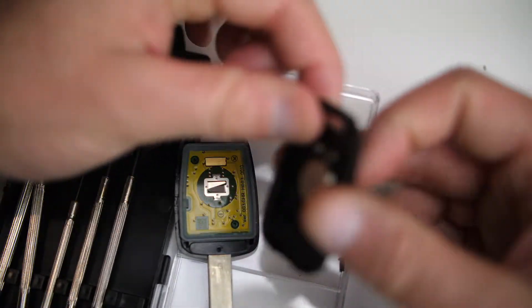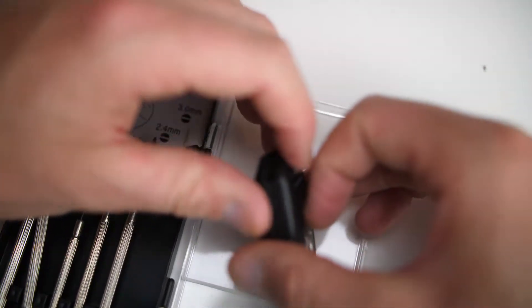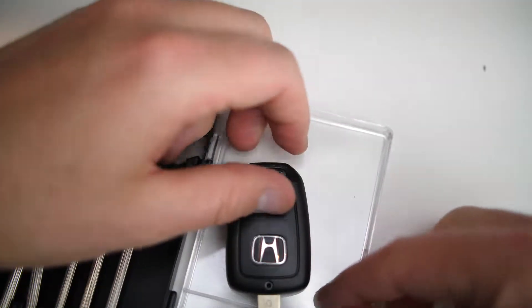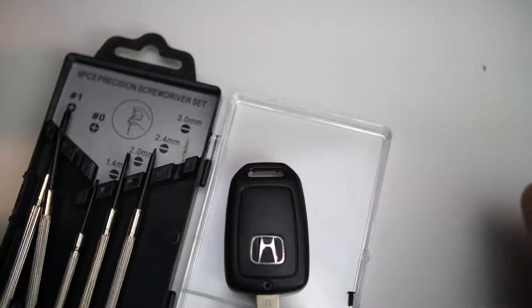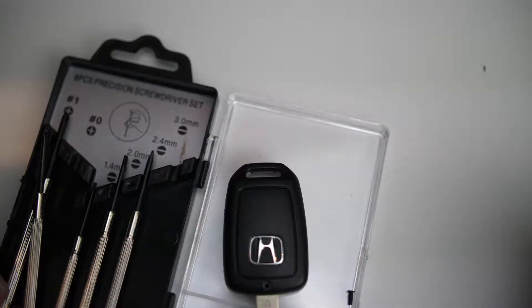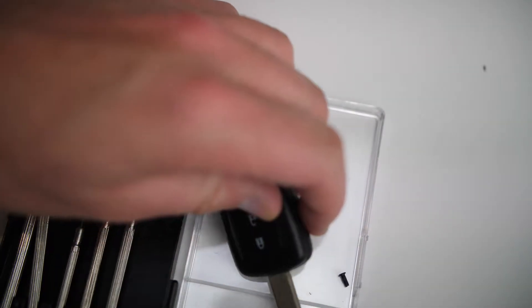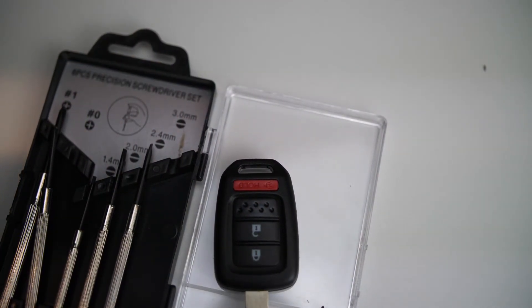Once we've got the new battery in, just replace the backing and snap that back together like so, put the little screw back in and that's it. So that's how you change the battery for the HR-V 2014 to present if you've got the physical key version. Thank you.